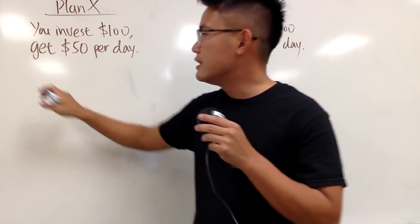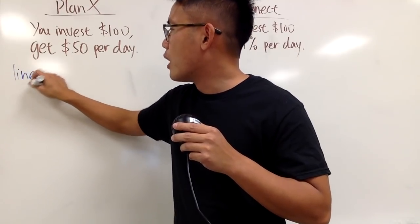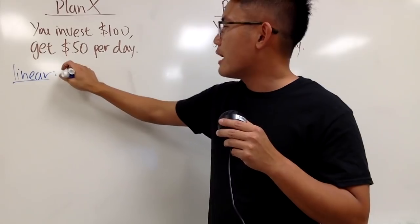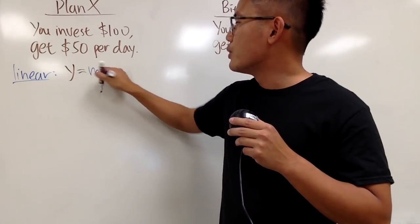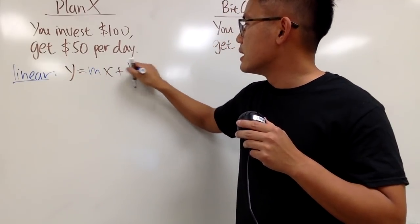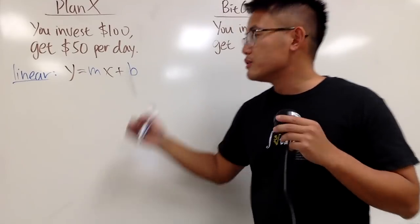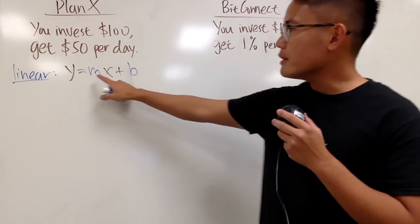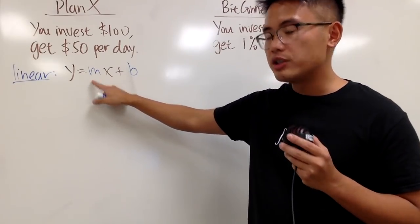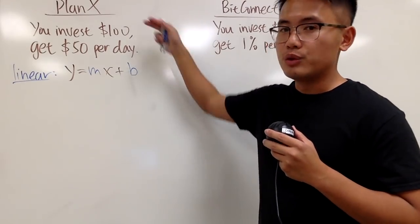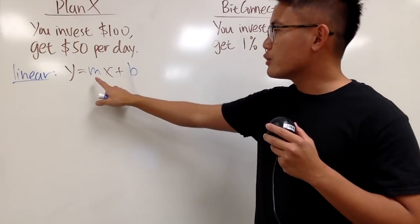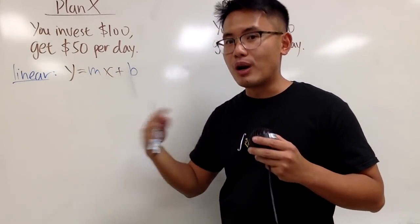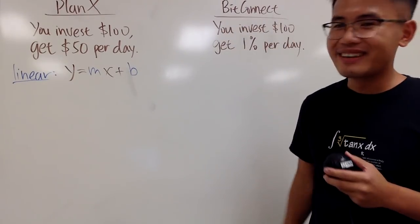First of all, let me make this clear. We only get $50 per day all the time. Right? That's a flat rate. $50 per day. So in this case, this is what we call a linear growth. You have a linear equation on this. And we can use the formula, the equation, y is equal to mx plus b.